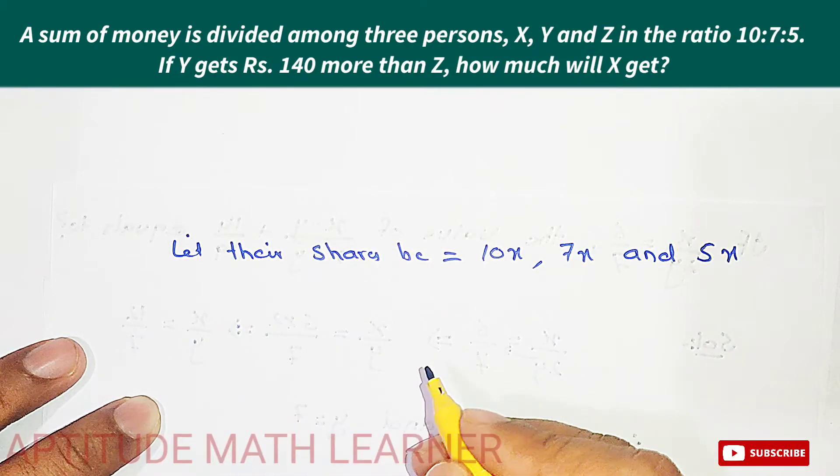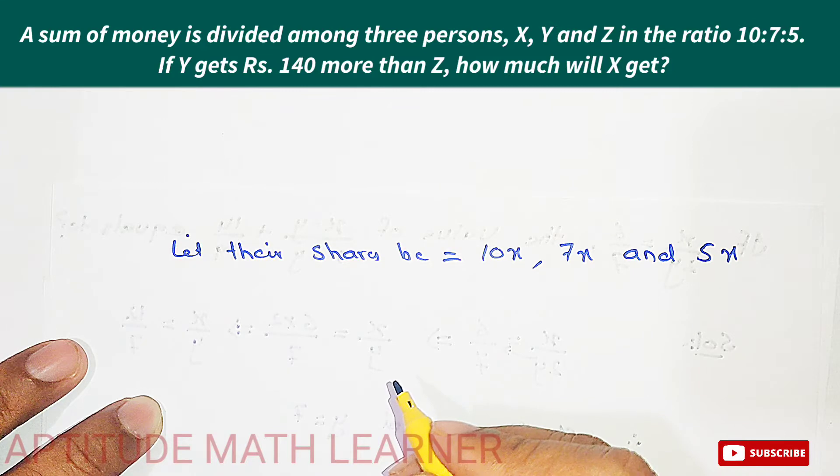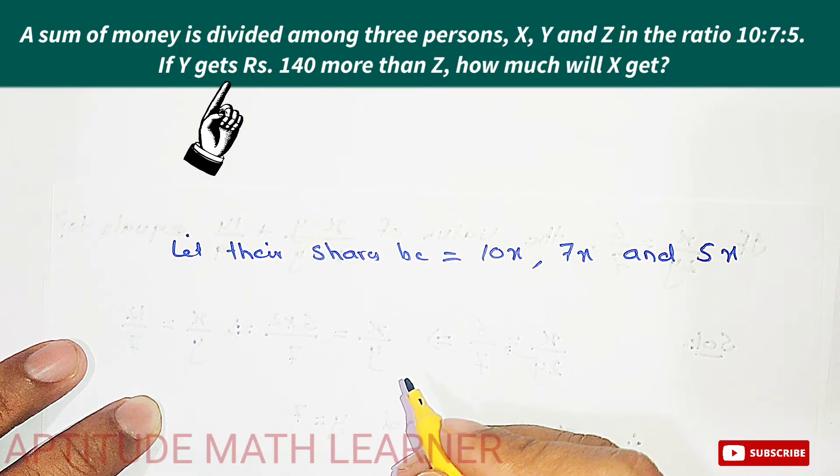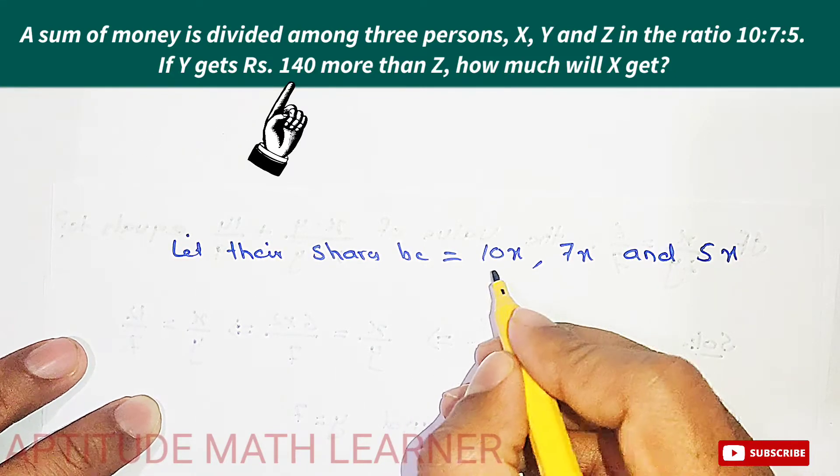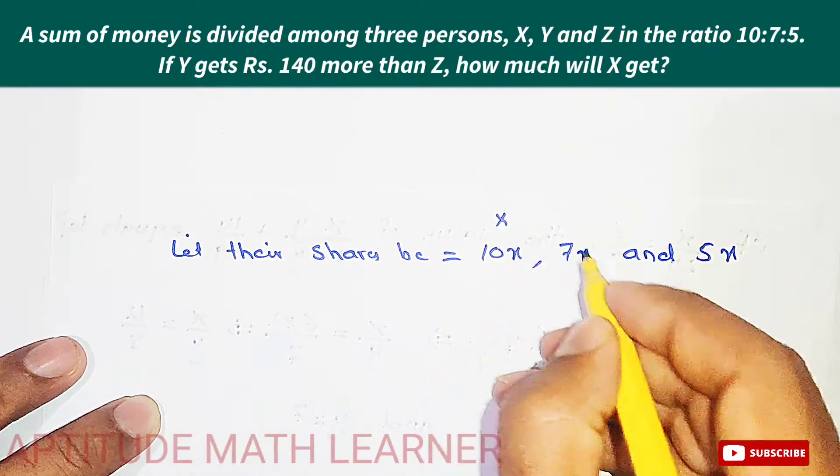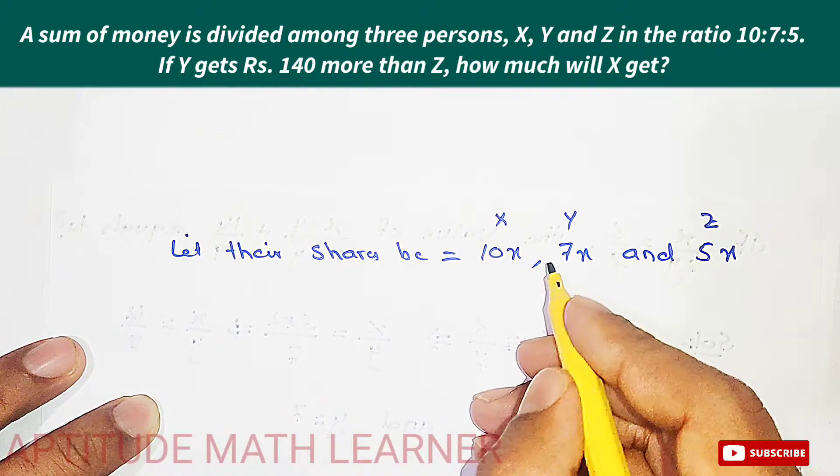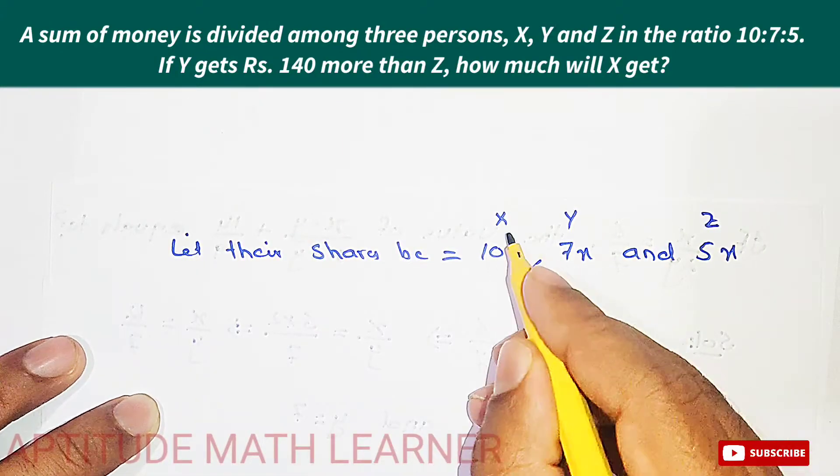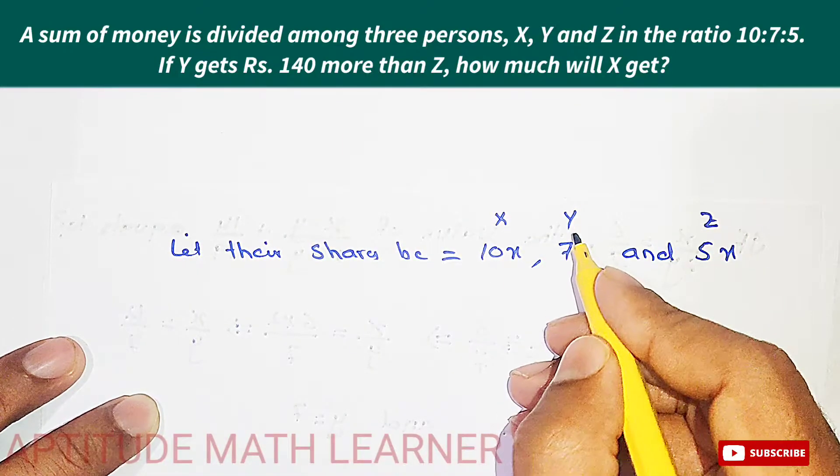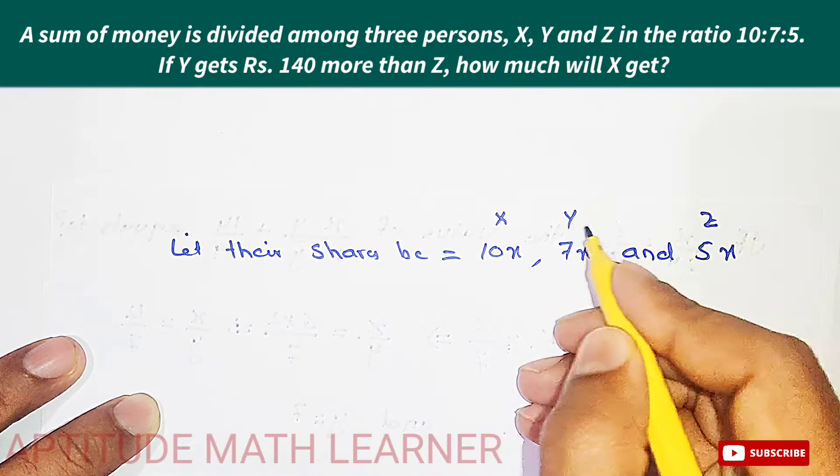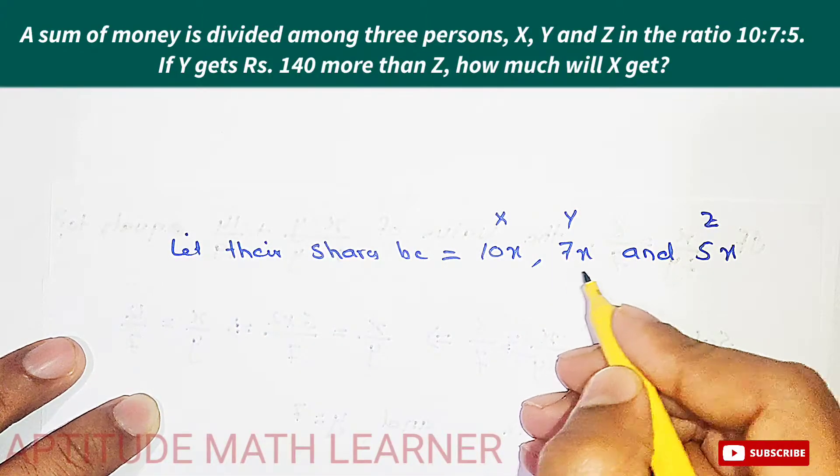In the question, if you see, Y gets Rs. 140 more. Here, 10x is for X, 7x is for Y, and 5x is for Z. These are the ratios of X, Y, and Z. The question says that Y is having the ratio 7x.